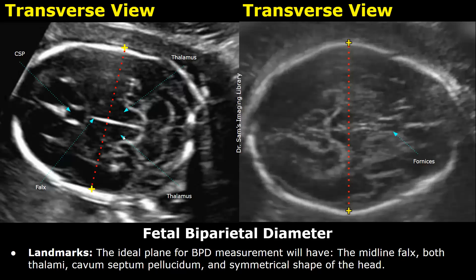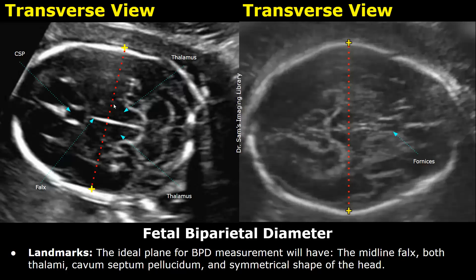This level is ideal for measuring BPD. Some BPD measurements can be taken at a slightly different level where you see the fornices instead of the cavum septum pellucidum. This is also acceptable to measure the BPD, but the first level is ideal.